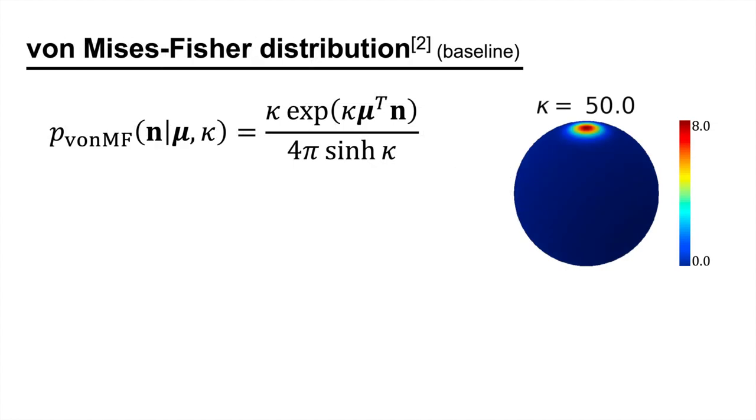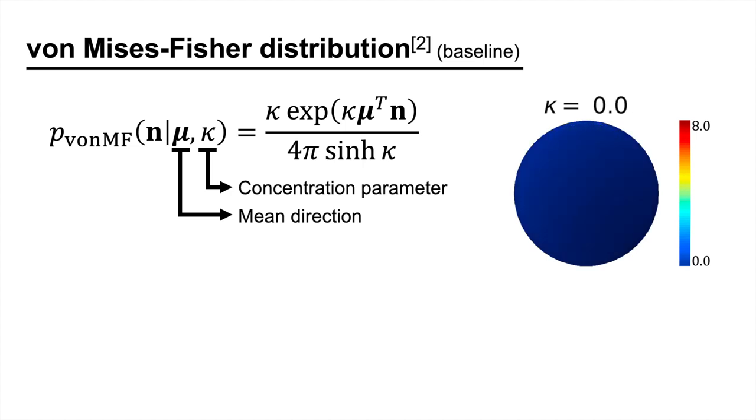We start with the von Mises-Fischer distribution, which has two parameters, mu and kappa. Mu is a three-dimensional unit vector that represents the mean direction, and kappa is the concentration parameter. Higher value of kappa means that the distribution is more concentrated towards the mean direction. As kappa goes to zero, the distribution becomes uniform.